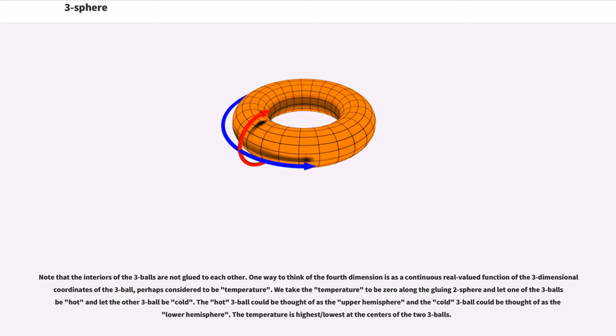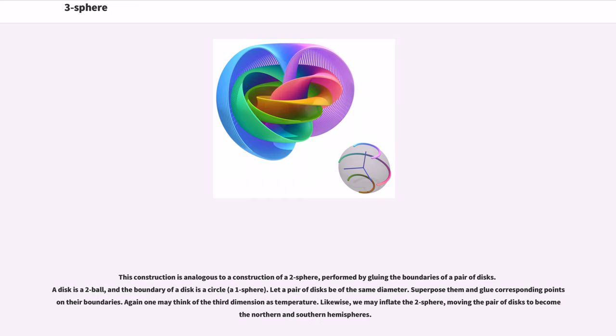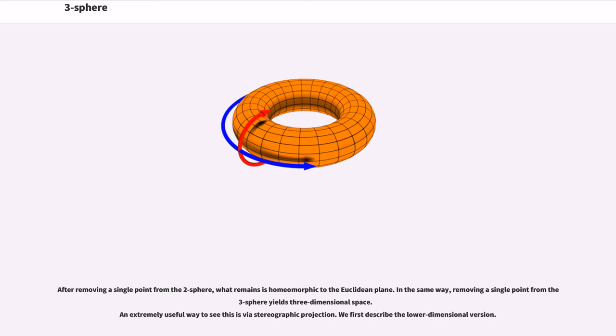The hot three-ball could be thought of as the upper hemisphere and the cold three-ball could be thought of as the lower hemisphere. The temperature is highest/lowest at the centers of the two three balls. This construction is analogous to a construction of a two-sphere, performed by gluing the boundaries of a pair of discs. A disc is a two-ball, and the boundary of a disc is a circle. Let a pair of discs be of the same diameter. Superpose them and glue corresponding points in their boundaries. Again one may think of the third dimension as temperature. Likewise, we may inflate the two-sphere,